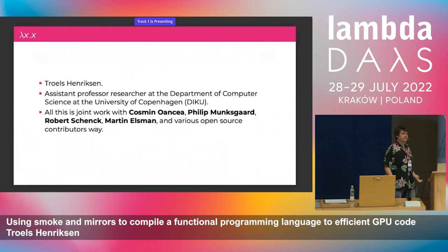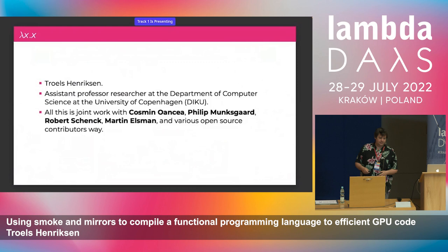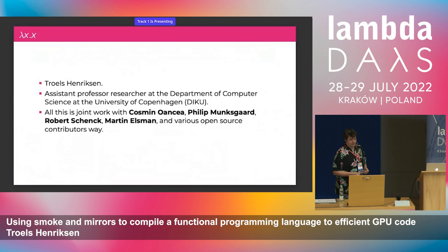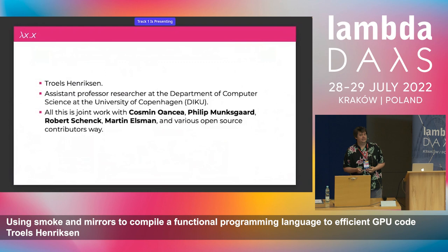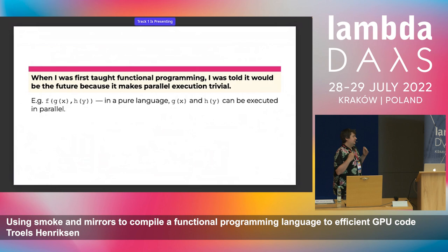I work at the University of Copenhagen where I tell students lies such as that they can write multi-threaded C programs and have them run correctly. I also work in the intersection of programming languages and high-performance computing, where we have this hope that we can make functional programming run really fast on GPUs and other exotic architectures. I work in a small team together with Cosmin Wancher, Philip Monsko, Robert Schenk, Martin Elsman, and various other students.